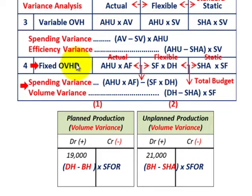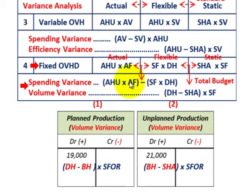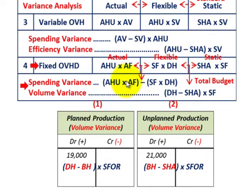For fixed overhead, we're going to have a spending variance and a volume variance. The spending variance is the difference between our actual and our flexible budgets. It's calculated as actual hours used times the actual fixed rate, minus the standard fixed overhead rate times the denominator hours — the total budgeted direct labor hours for the period.